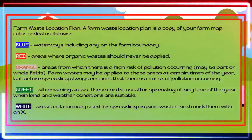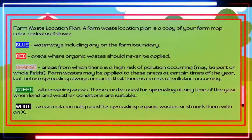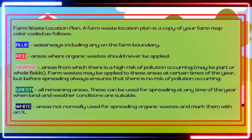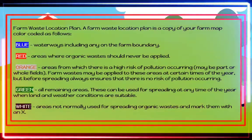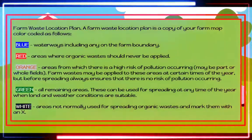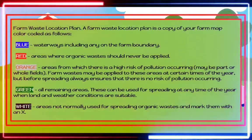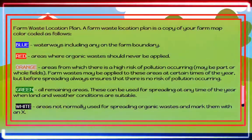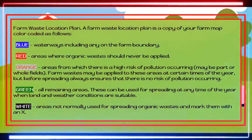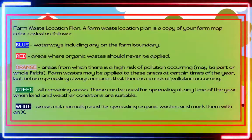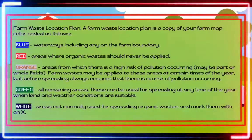Farm waste location plan: A farm waste location plan is a copy of your farm map color-coded as follows. Blue: water waste including any on the farm boundary. Red: areas where organic waste should never be applied. Orange: areas from which there is a high risk of pollution; farm waste may be applied at certain times of the year but only when there is no risk of pollution occurring. Green: all remaining areas, which can be used for spreading at any time when land and weather conditions are suitable. White: areas not normally used for spreading organic waste, marked with an X.